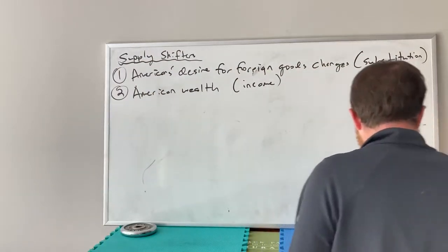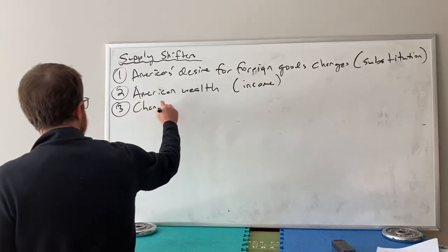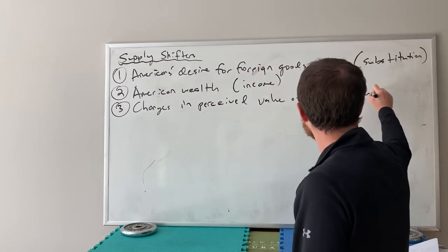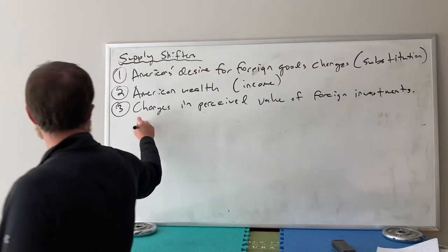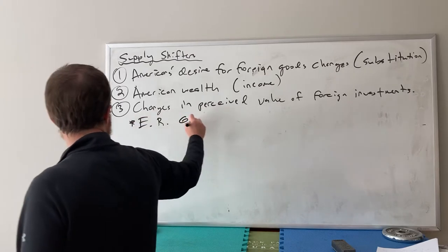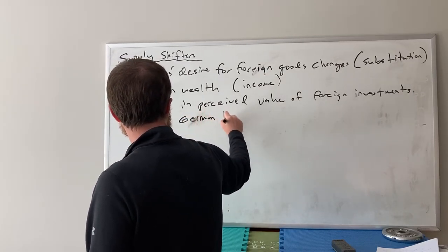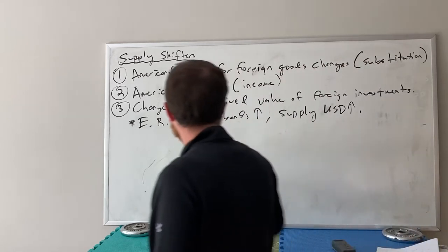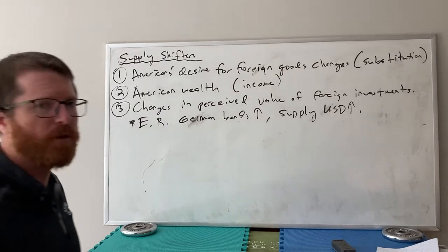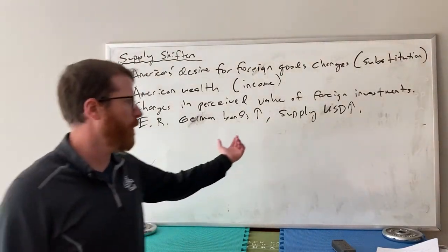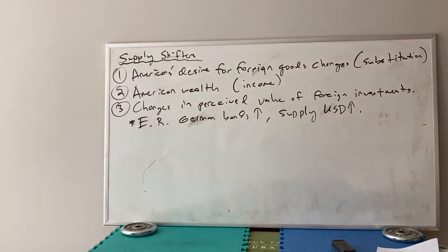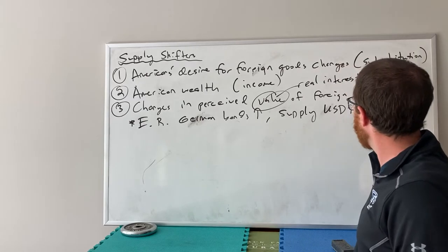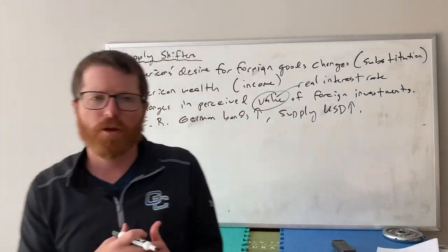A third factor is changes in the perceived value of foreign investments. For example, if the expected return on German bonds goes up, the supply of US dollars goes up, because people will buy more German bonds and thus have to supply more US dollars to purchase them. This is really thinking in terms of real interest rates — investors would do the calculations for inflation and make adjustments accordingly.